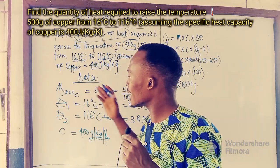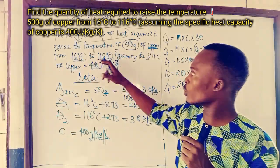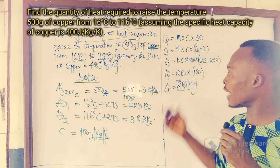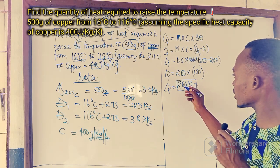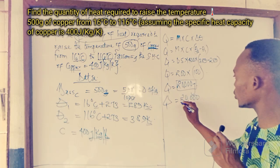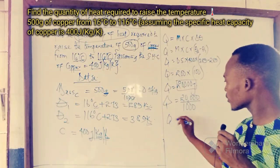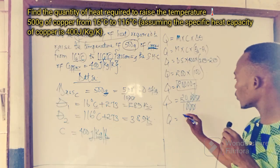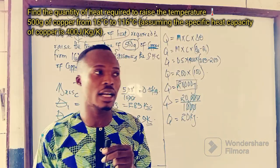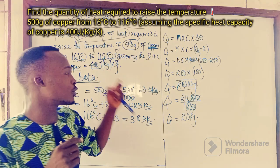So 20,000 joules is the amount of heat needed to raise the temperature of copper from 16 degrees Celsius to 116 degrees Celsius. We can also convert this to kilojoules by dividing by 1,000, which gives us 20 kilojoules. So 20 kilojoules is the amount of heat required to raise the temperature of that copper of mass 500 grams from 16 to 116 degrees Celsius.